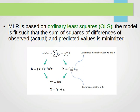The most common way of fitting a multiple linear regression model is ordinary least squares, or OLS. In OLS, the model is fit such that the sum of squared differences between the observed (actual) data and the predicted values is minimized. We have the actual values and the predicted values, and we try to minimize the sum of squares of differences between those two.